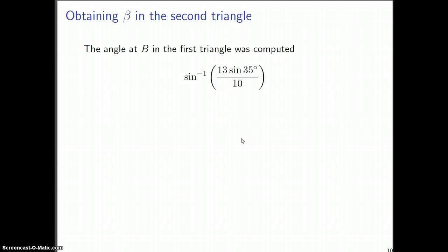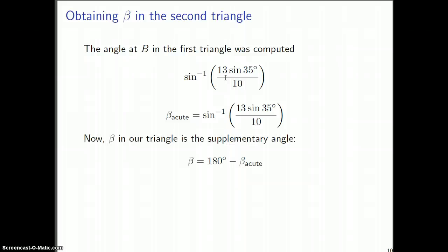Let's just recall this. We computed the beta angle in the first triangle as sine inverse of 13 sine 35 degrees all over 10. This was called beta before, but since we have another angle beta coming up, let's call this beta acute. Now in our triangle, the new beta that we want is the old beta, but the supplementary angle. So we'll take our old angle that we found and subtract it away from 180 degrees. All we do is replace beta acute with this expression that we first computed. Our new beta angle, this obtuse angle, is 180 degrees minus sine inverse of this old thing.